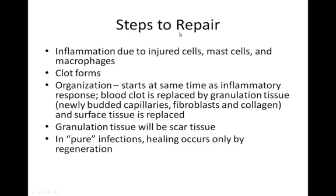The first step in repair is inflammation. Those injured cells are going to release substances that cause inflammation, particularly your mast cells. Mast cells release histamine, and that histamine causes localized blood vessels to become leaky so substances — particularly fluid — leak into the area. Macrophages will start creeping in to clean up all the debris. If you've damaged a blood vessel, blood will leak into the area and a blood clot will form.